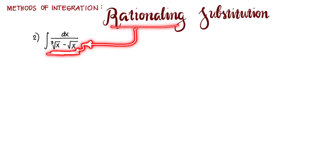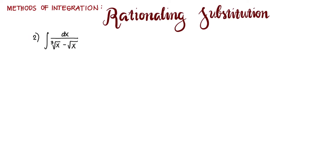This method is useful when the integrand contains a fraction with more than one radical. Because we only have a single variable under the radical sign, this belongs to case number 1 — that's the nth root of x, where n is the LCD of the fractional exponents.